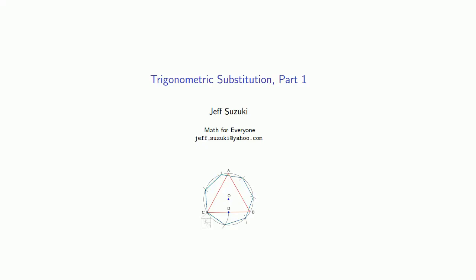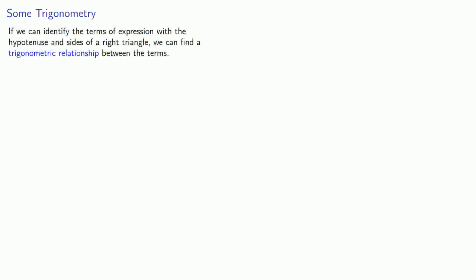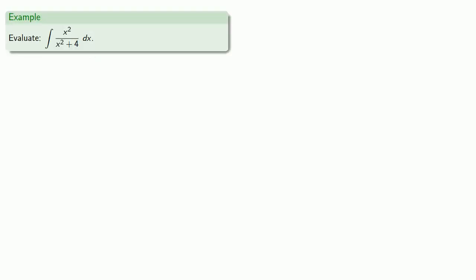One of the more powerful methods of integration is known as a trigonometric substitution. If we can identify the terms of an expression with a hypotenuse and sides of a right triangle, we can find a trigonometric relationship between the terms. For example,